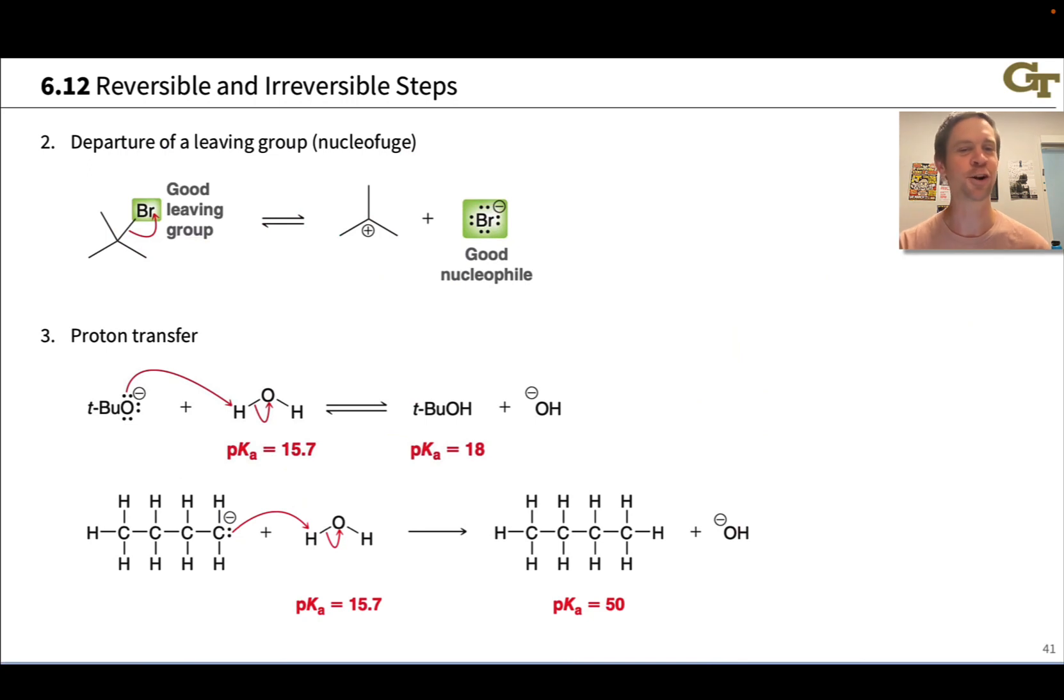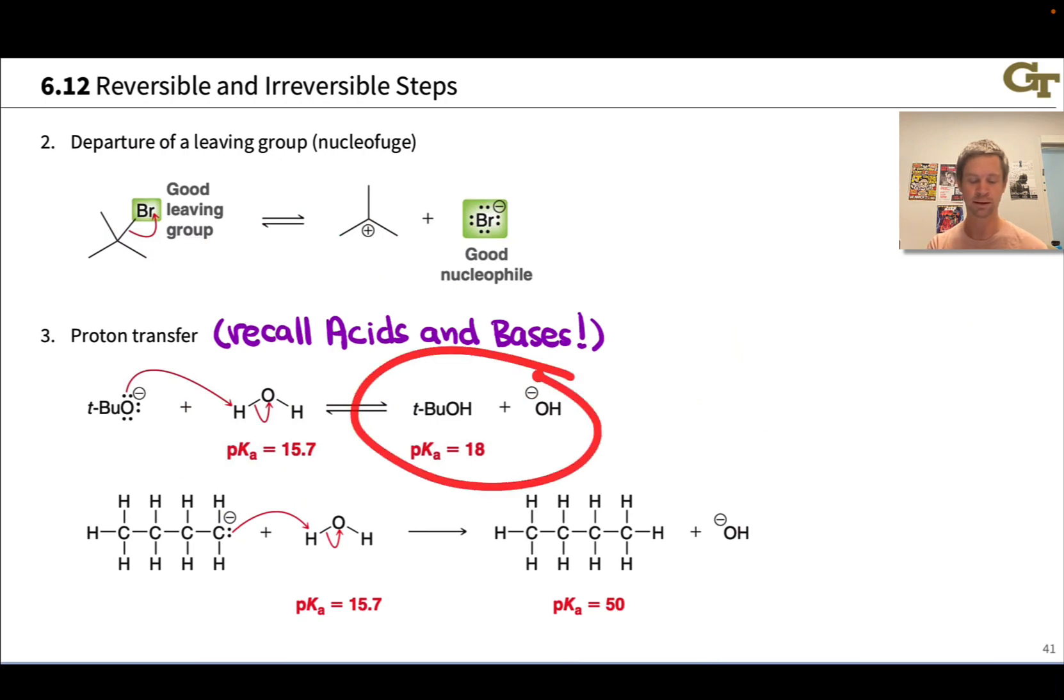The third example here is proton transfer, and we've talked a great deal about what makes a proton transfer favorable or not, reversible and irreversible. You can think about this in terms of pKa differences, with the favored side corresponding to the weaker acid or the weaker base. For example, in this first case, we've got quite a small pKa difference between tert-butanol on the product side and water on the reactant side, only about 2.5 pKa units. This is why this arrow is a reversible reaction arrow, because the reverse proton transfer occurs at a non-negligible rate, and at equilibrium, although the products will be favored, not by much, only by about 2.5 orders of magnitude.